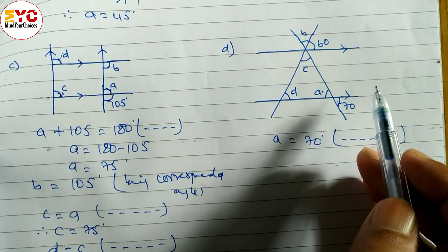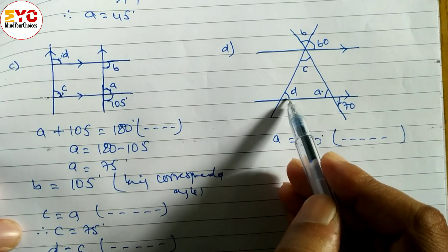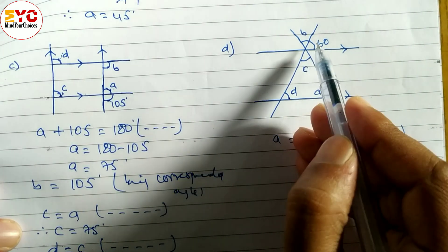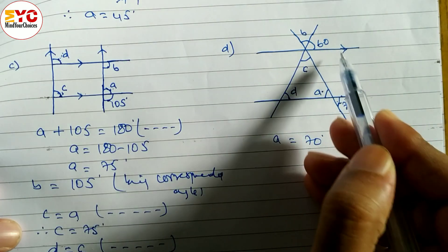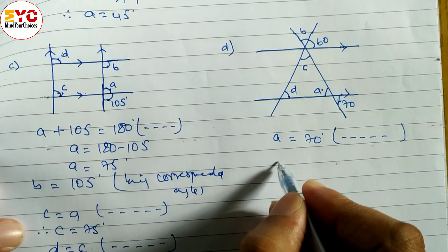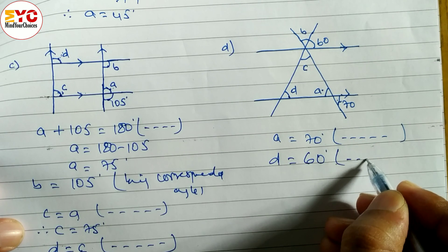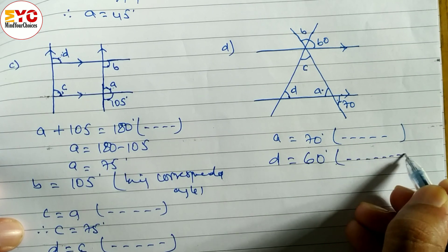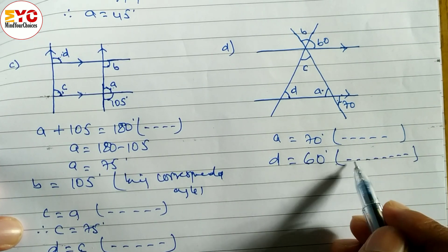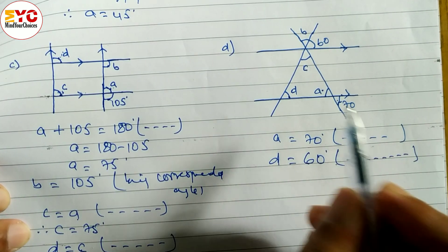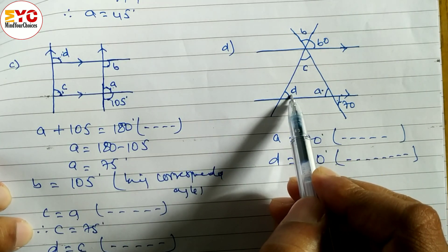What is the relation? You can see one angle is inside and one is outside of these two parallel lines. So we can write d is equal to 60 degrees. Reason: being corresponding angle. We got value of d also.